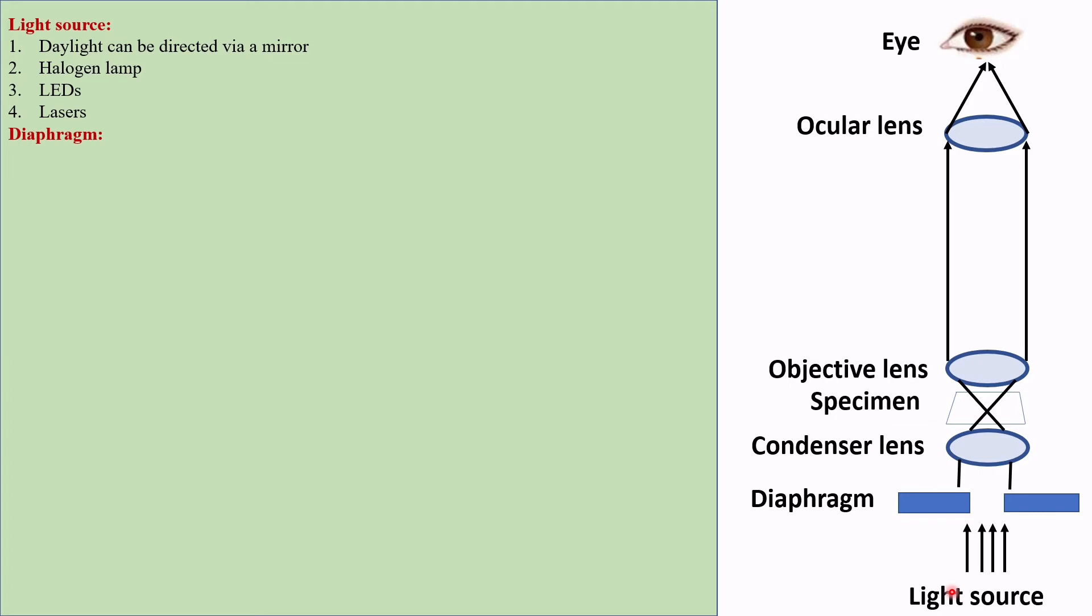Diaphragm. It is an opaque structure. It has an opening at its center that is called aperture. It stops the passage of light except for the light passing through the aperture.